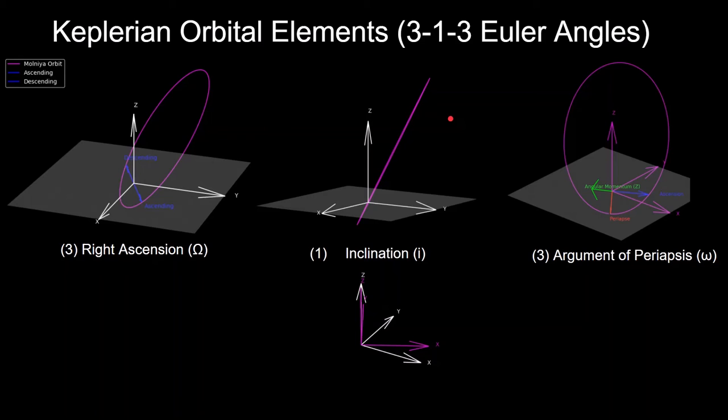Another application of using Euler angles are the Keplerian orbital elements. There are three of the elements that describe the orientation of an orbit with respect to the Earth-centered inertial frame, which is the white frame in this example. This is a 3-1-3 sequence, which means that the first rotation is about the Z axis, second one about the X axis, and the third one about the Z axis again. The first element is the right ascension, which is the angle in between the X axis of the Earth-centered inertial frame to the ascending node, which is the point where the orbit comes up through, going in the positive Z direction of the Earth equatorial plane.